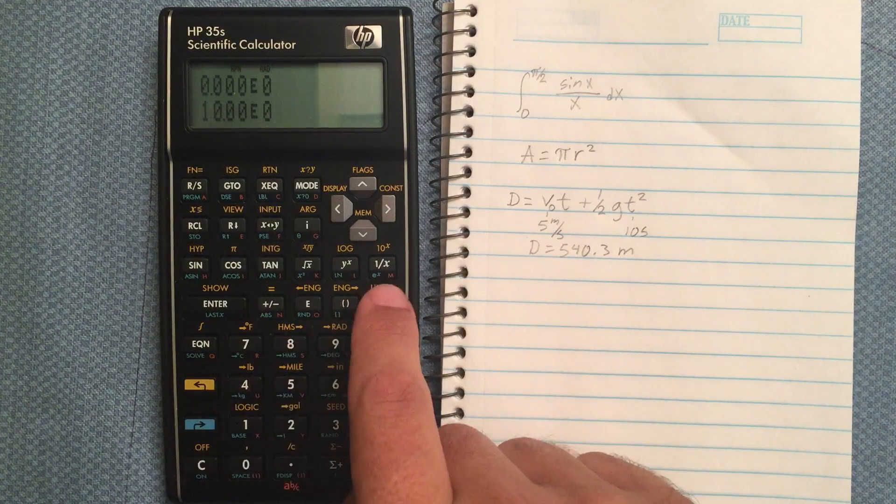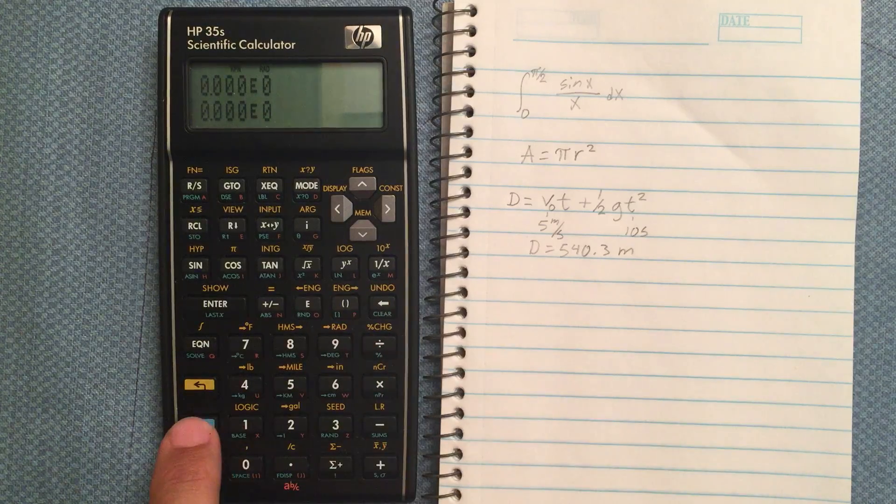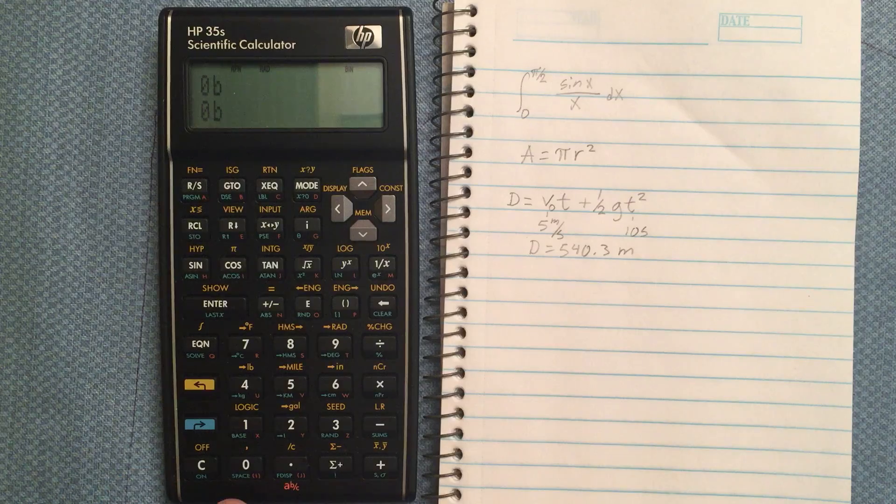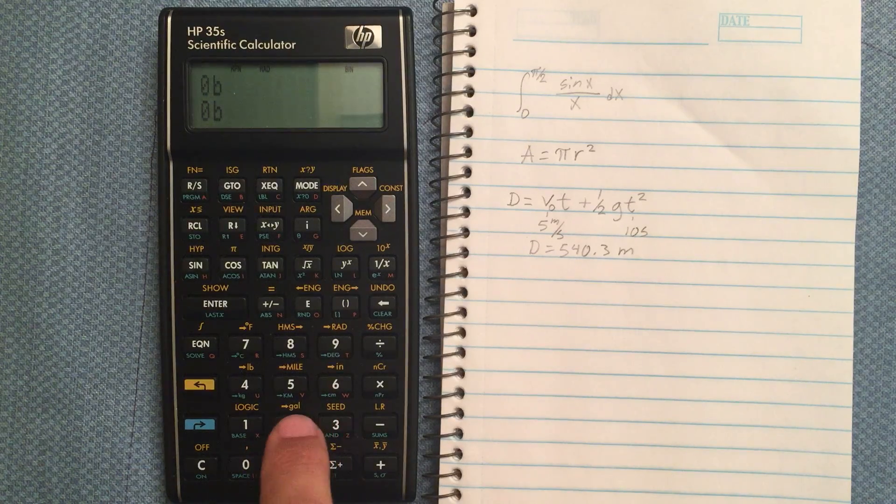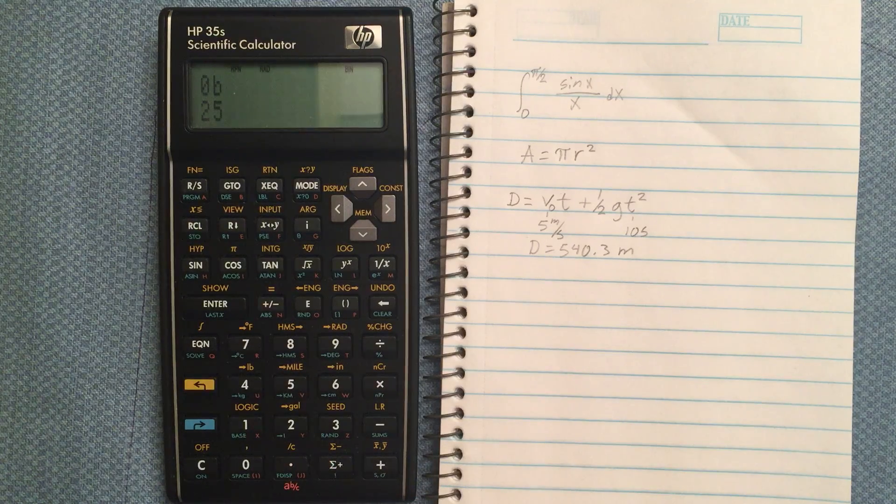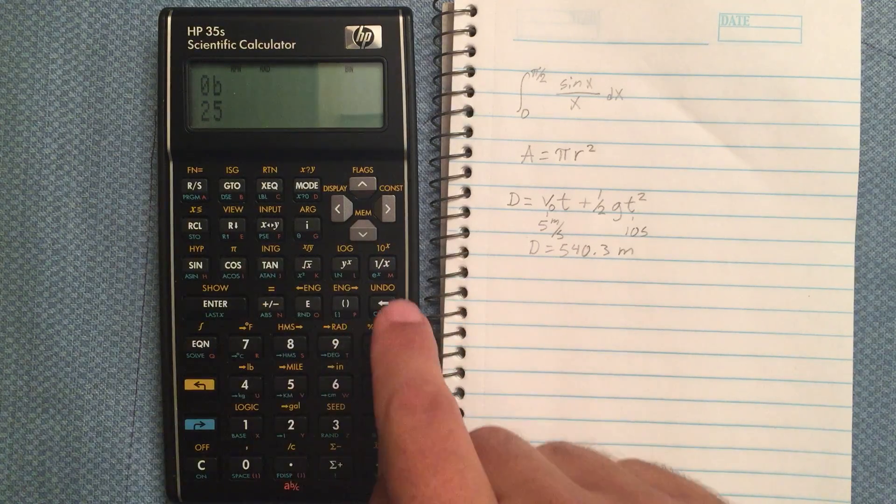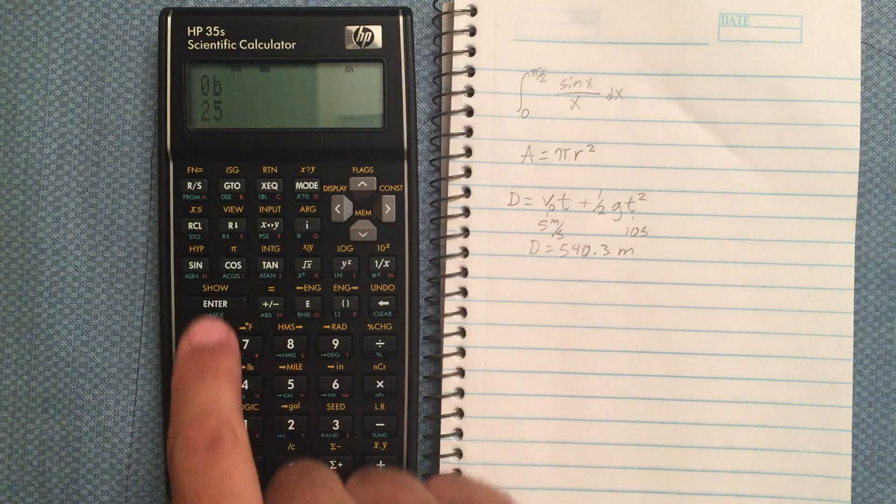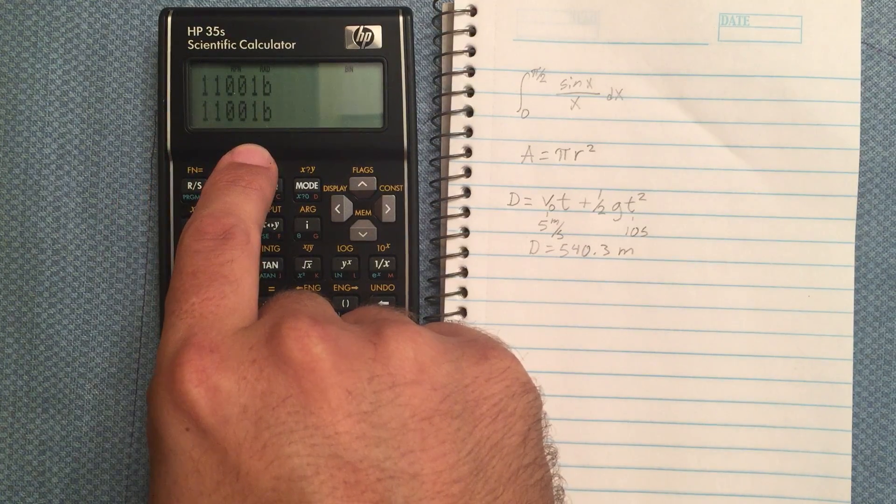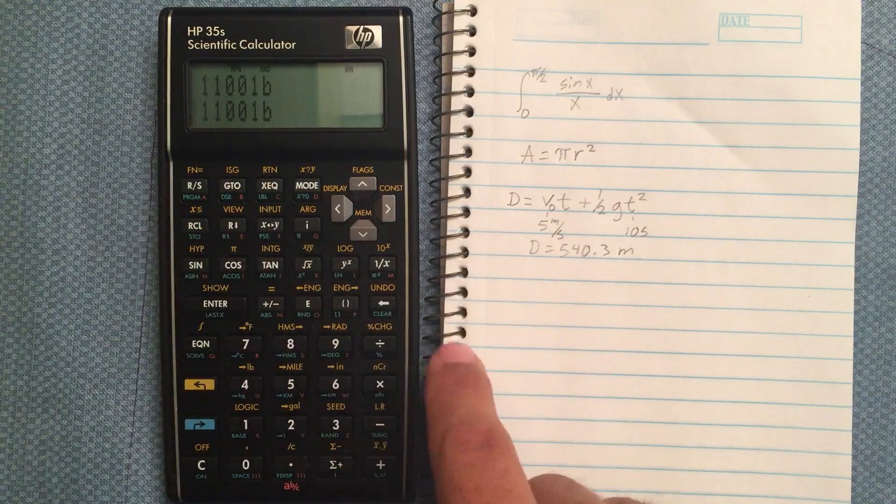However, if I switch bases, let's just clear that. Let's say I'm working in binary and I start entering a number here, 25. Again, it assumes that I entered in decimal. And if I hit enter, it will switch that to binary, which is the base that I'm in.